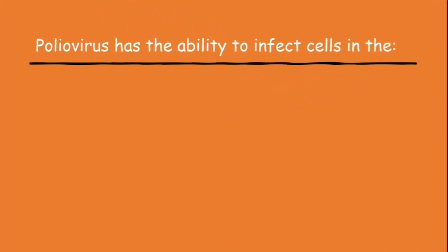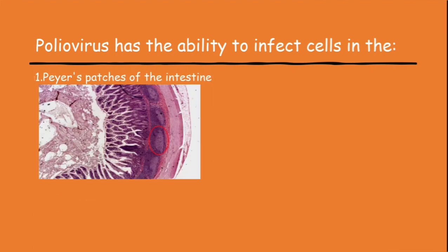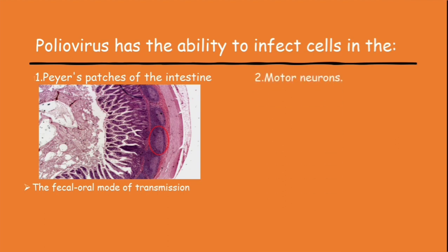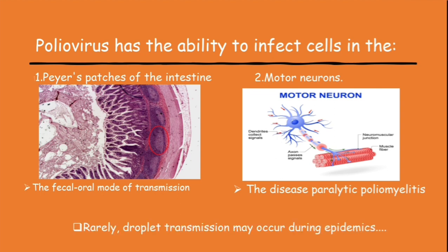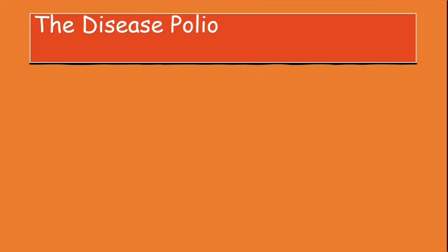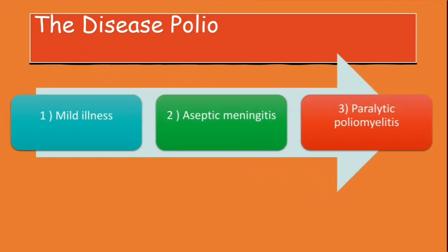The poliovirus has the ability to infect cells in the Peyer's patches of the intestine, and this tropism explains the fecal-oral mode of transmission. It also infects the motor neurons, which explains the disease paralytic poliomyelitis. In rare cases, droplet transmission may occur during epidemics.